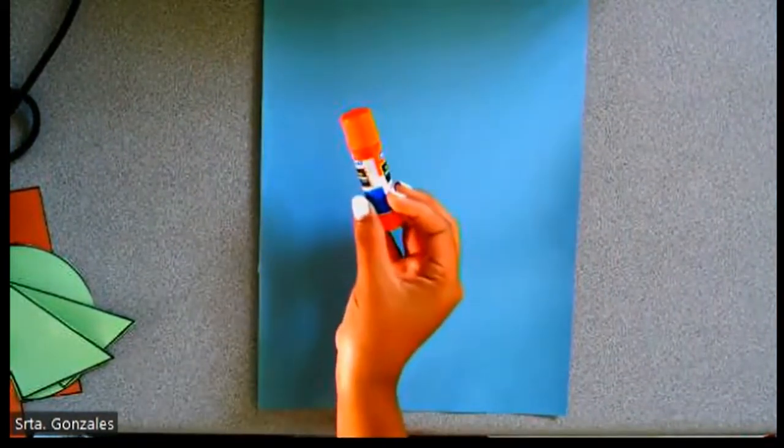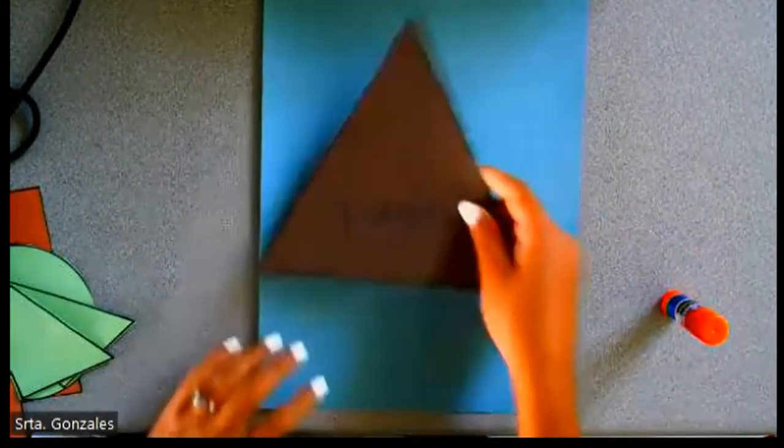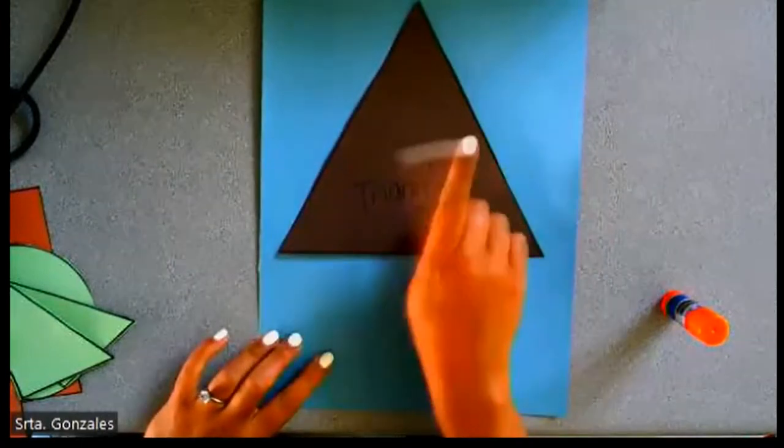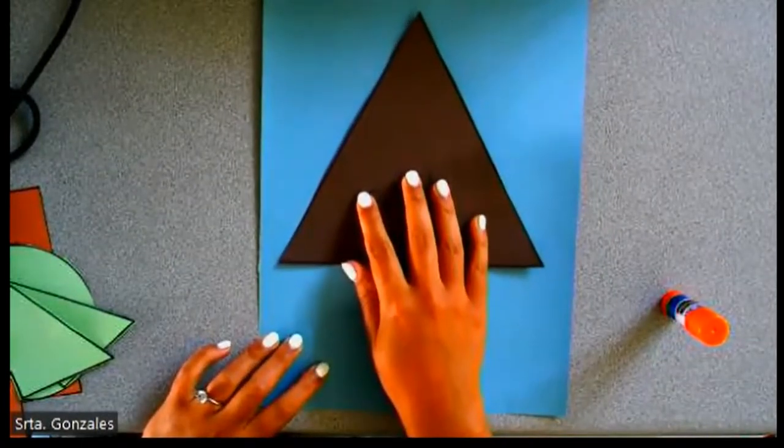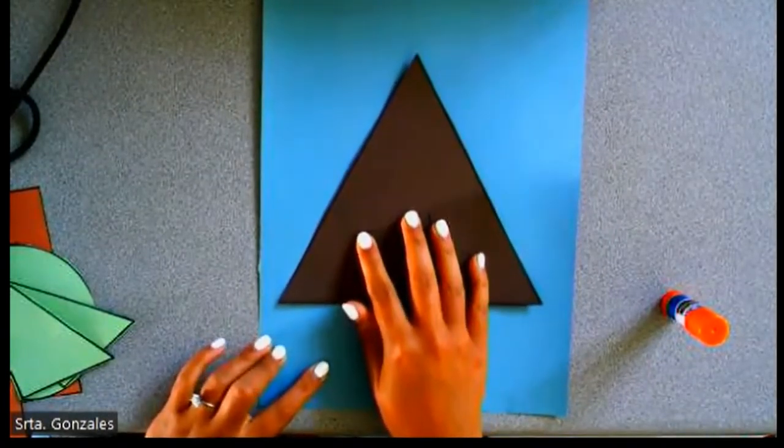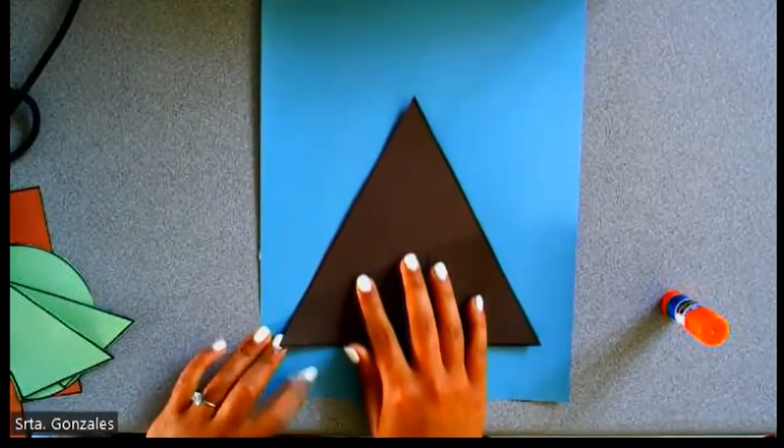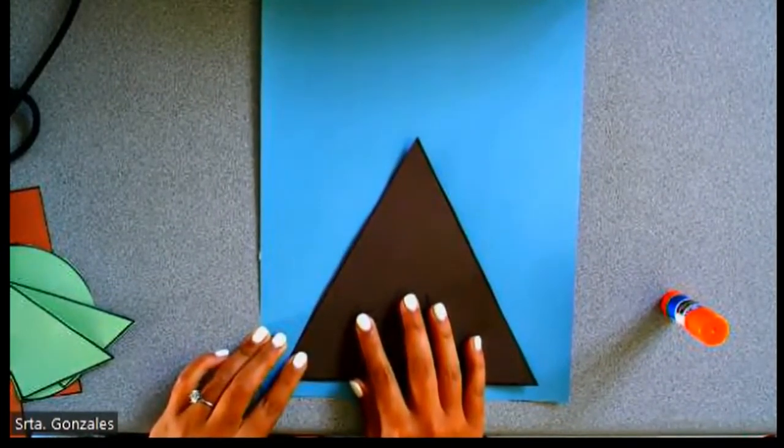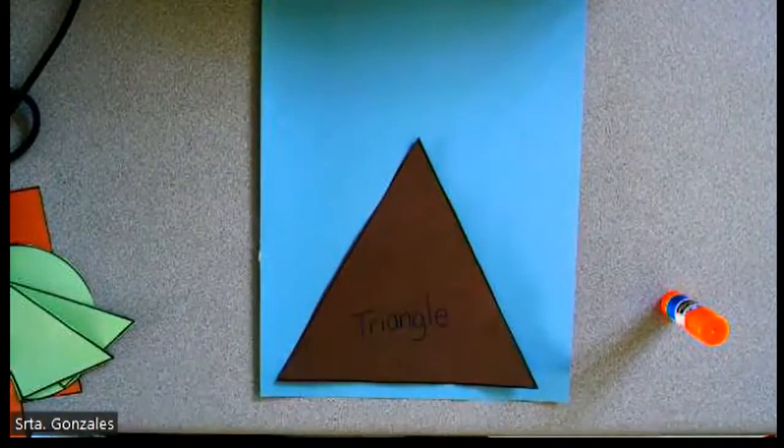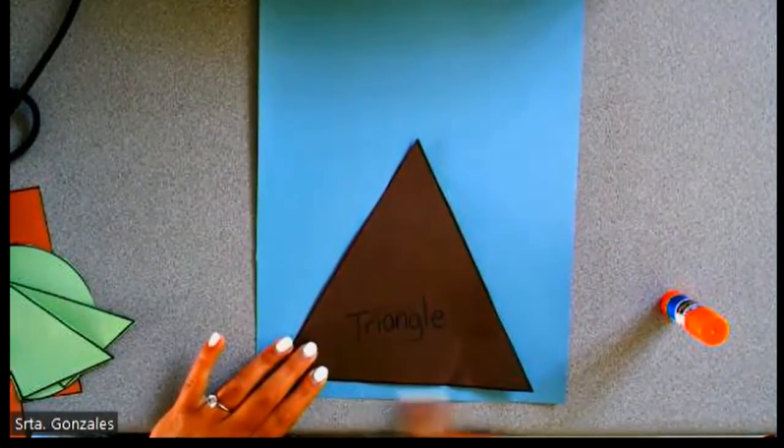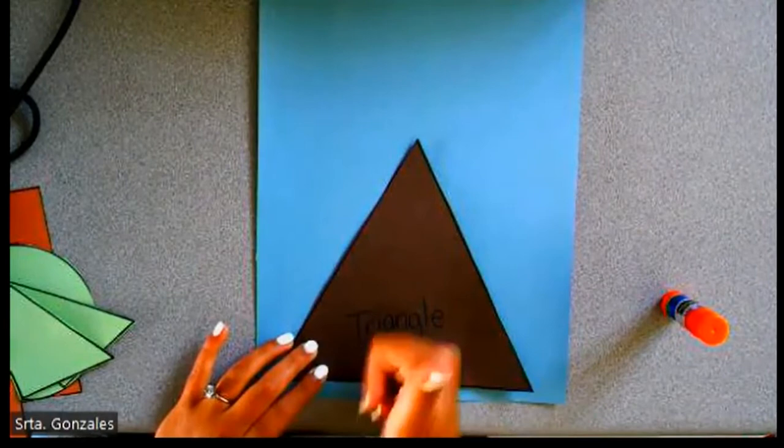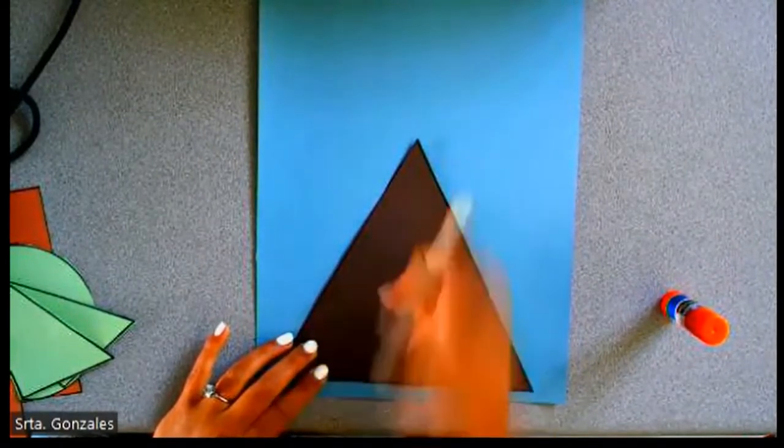Glue, glue stick. Glue the triangle at the bottom of the page. Lower, lower, lower. Perfect! Make sure that there's a little bit of space. That's perfect!